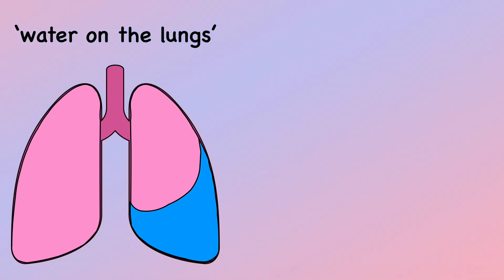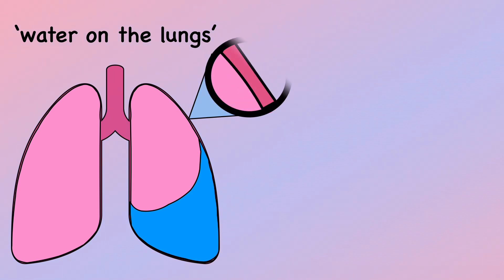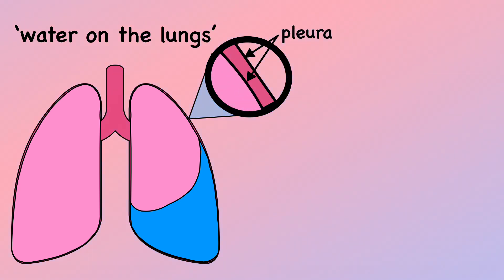Pleural effusion, also referred to as water on the lungs, is the build-up of excess fluid between the layers of the membrane called pleura that lines the lungs and the inside of the chest cavity.